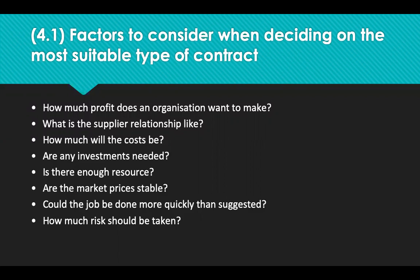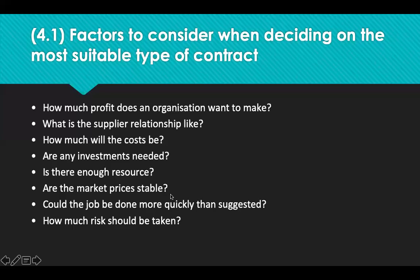So what factors do we need to consider when deciding on the most suitable type of contract? How much profit does an organisation want or need to make? How important is the supply relationship, and what is the supply relationship like? What are the costs involved? Is any investment needed? Does the supplier have capacity and capability? Are the market prices stable, and could the job be done more quickly than suggested? How much risk should be taken?